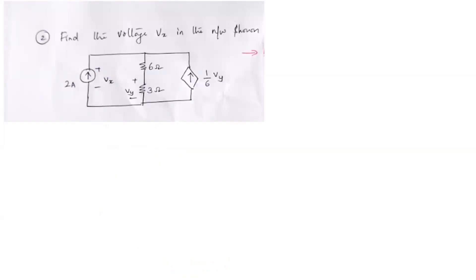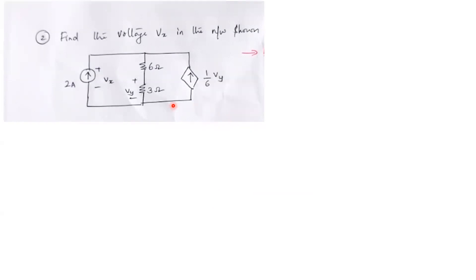Find the voltage VX in the network shown. In this problem, we need to find the value of VX. VX is positive at this terminal, and this is the positive terminal with the ground as the negative terminal. There is also a dependent source — a voltage-controlled current source given by 1/6 times VY.